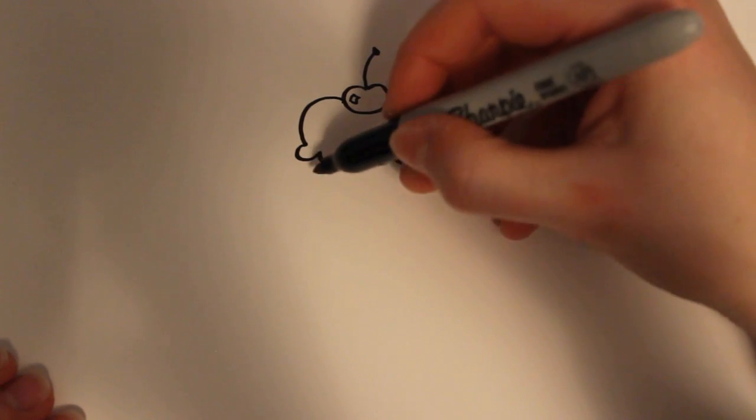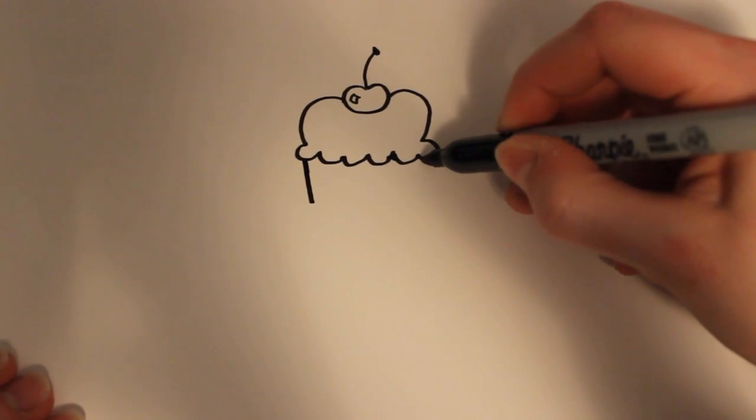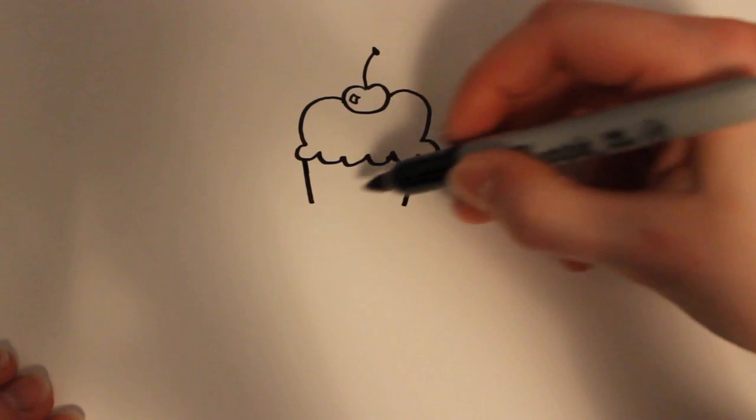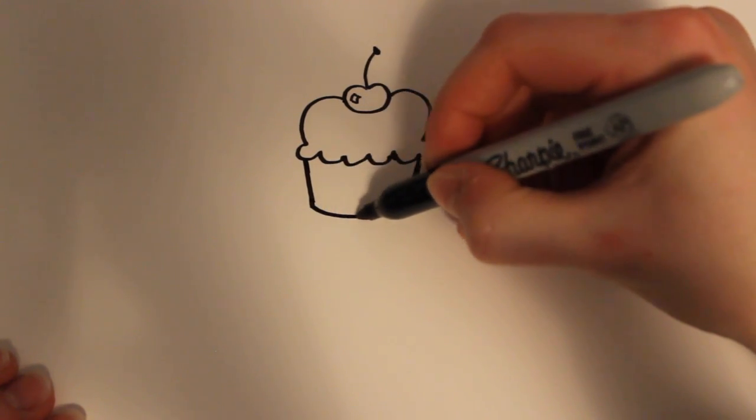And then for the little wrapper part I'm going to make two straight lines down again, and I'm going to curve the bottom part.